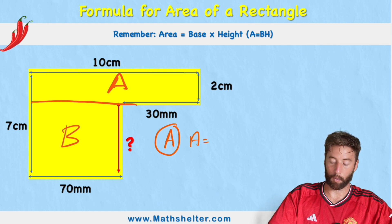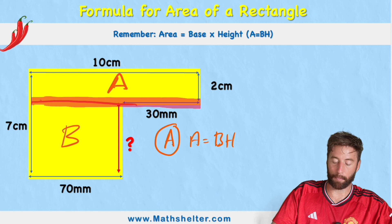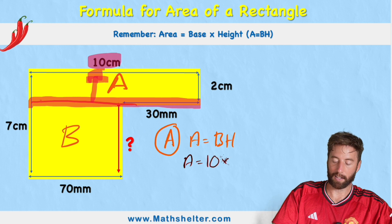And area equals base times height. So in this case, we need to find the base. Well, my base would be this line just here that I'm drawing. This is the base of rectangle A. And we can see if we look opposite, the measurement is 10 centimeters.